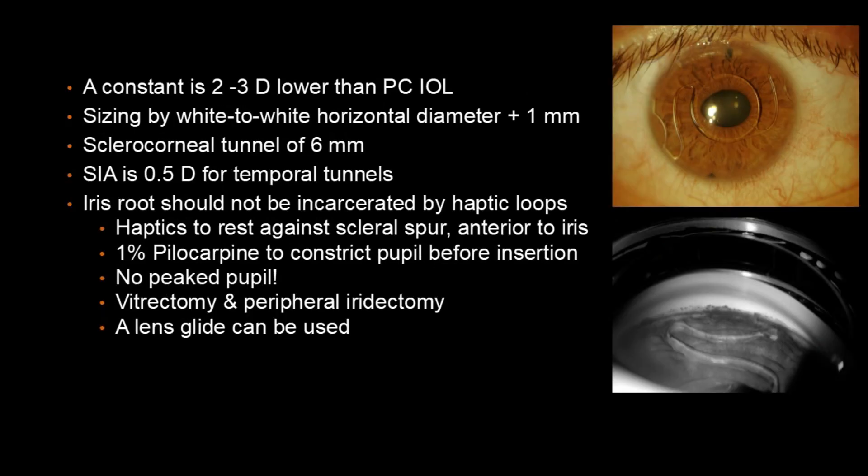The A-constant is 2-3 diopters less than the posterior chamber lens. Sizing is the most important factor in minimizing complications — it needs to be one millimeter larger than the horizontal white-to-white diameter. The sclerocorneal tunnel is 6 millimeters because these are PMMA IOLs.